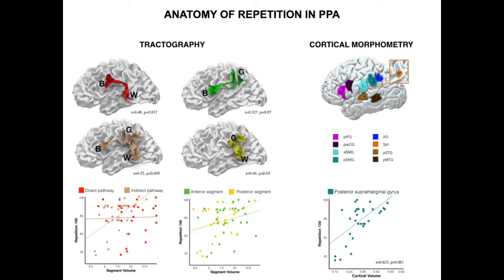When we looked at the indirect segment, the association with repetition became significant. The posterior segment appeared to be mainly driving the correlation, though the two segments were not fundamentally different except for two outliers in the anterior segment. For cortical areas, after correcting for multiple comparisons, the only area that survived was the posterior supramarginal gyrus — which was also the only cortical area that differed significantly between patients and controls — showing a strong correlation with performance on the repetition task.